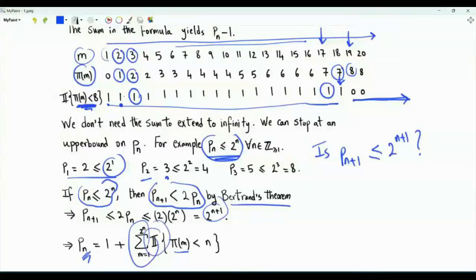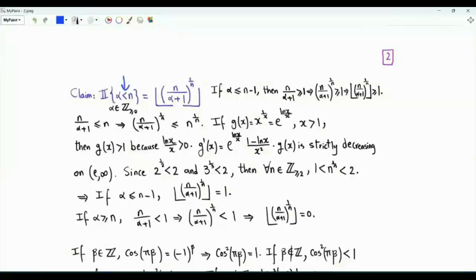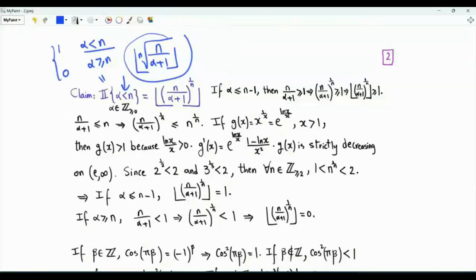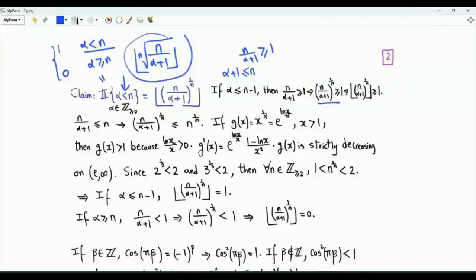Can we express the prime-counting function π and the indicator function in a nice way in terms of functions widely used in mathematics? For the indicator function with the condition α < n, what we can do is divide n by α plus 1, take the nth root, then take the floor. This indicator is 1 if the condition is true (α strictly less than n) and 0 if α is greater than or equal to n. We need to show that this floor is either 0 or 1 depending on whether α is strictly less than n. If α is less than or equal to n minus 1, then α+1 is less than or equal to n, so n divided by α+1 is greater than or equal to 1, and the nth root of n/(α+1) is greater than or equal to 1, so the floor of this quantity is greater than or equal to 1.